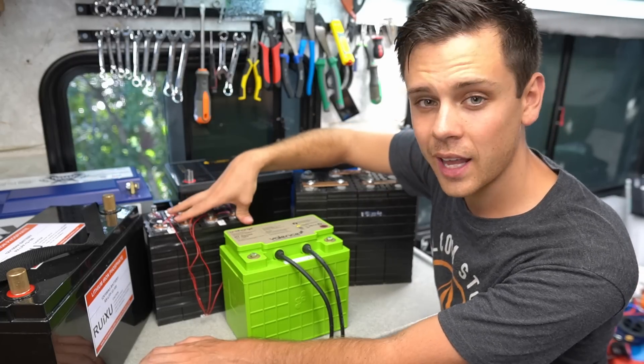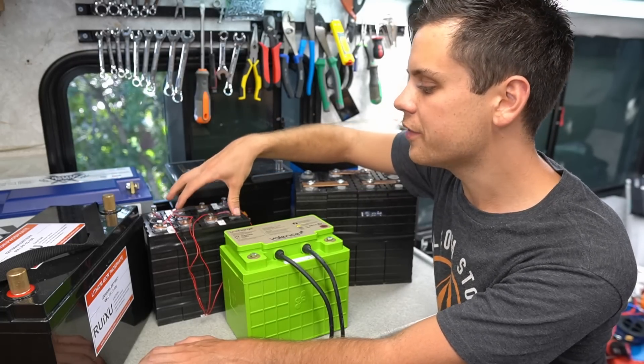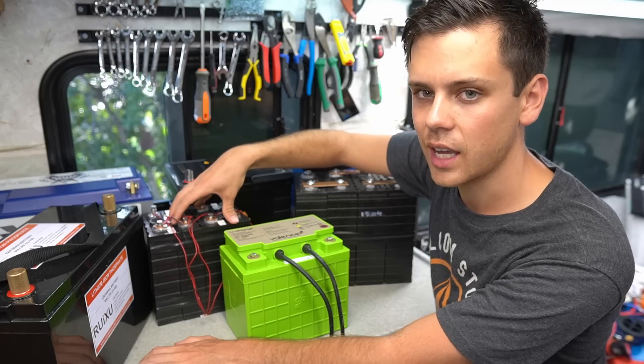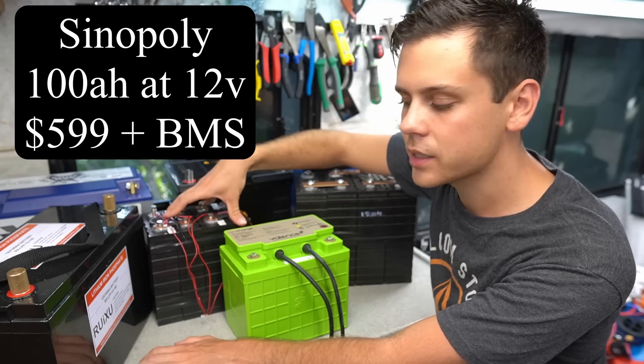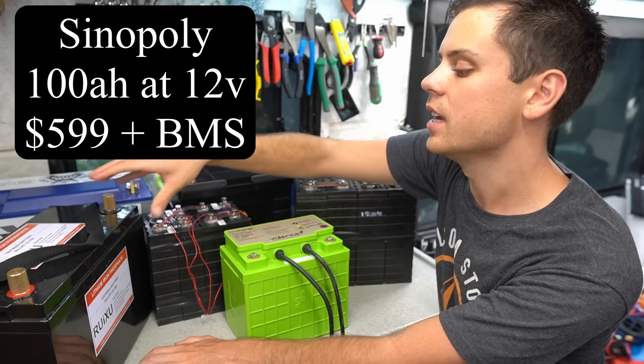Xenopoly, this is a 40 amp hour battery cell set, but if you buy the 100 amp hour cell set it's $599. That does not include the BMS so it's around the same cost as a Ruxu.